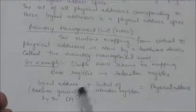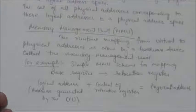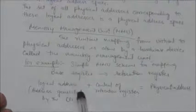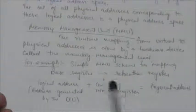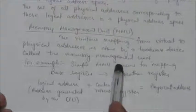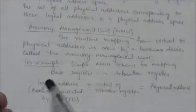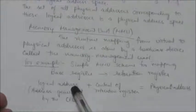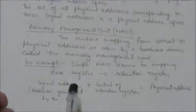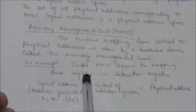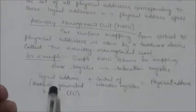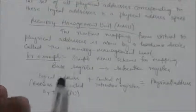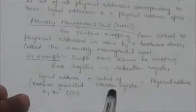Here, just for illustration, I am going to explain a simple Memory Management Unit scheme for mapping a logical or virtual address into a physical address. In this scheme, the base register is referred to as the relocation register, and the logical address — the address generated by the CPU — is added with the content of the relocation register.